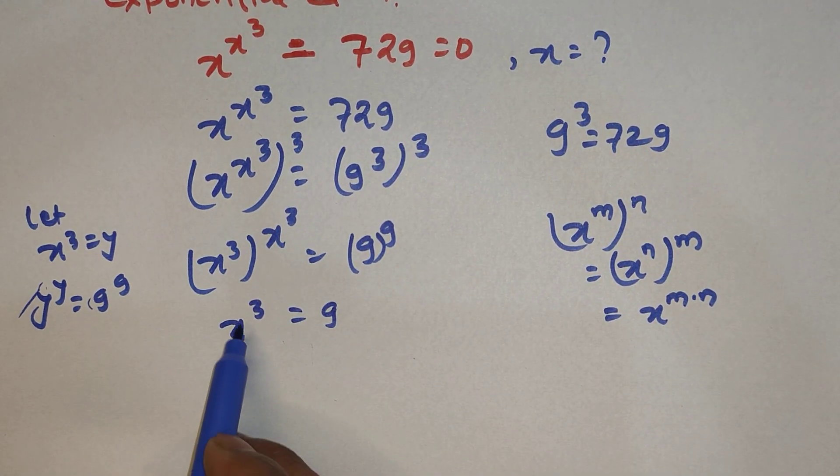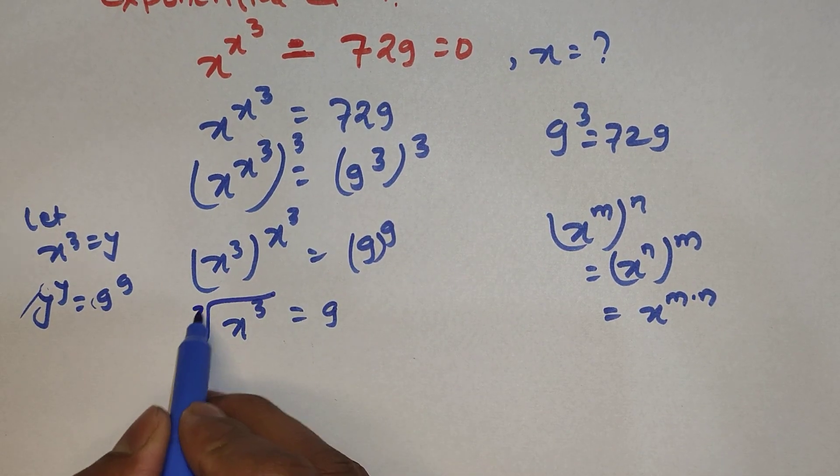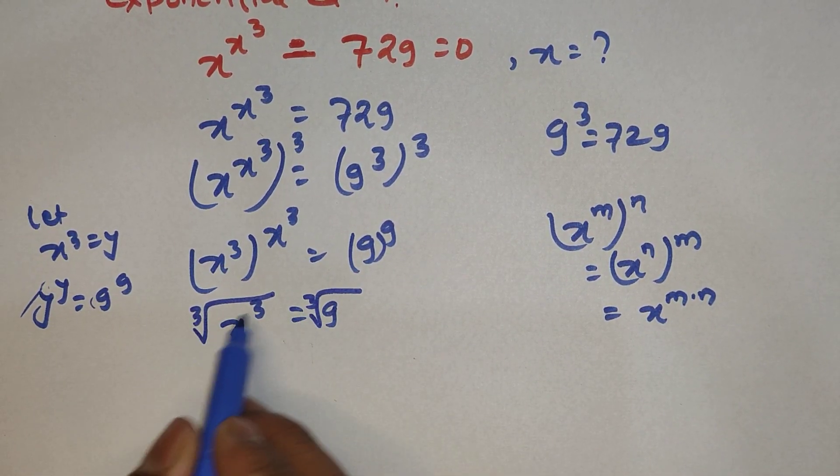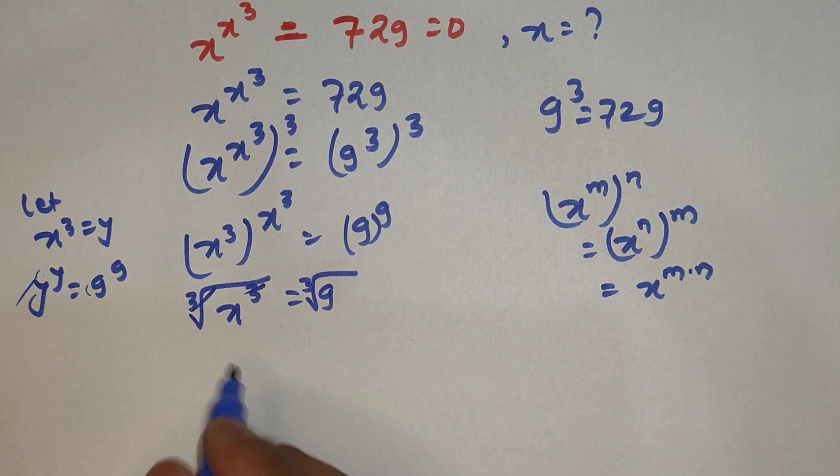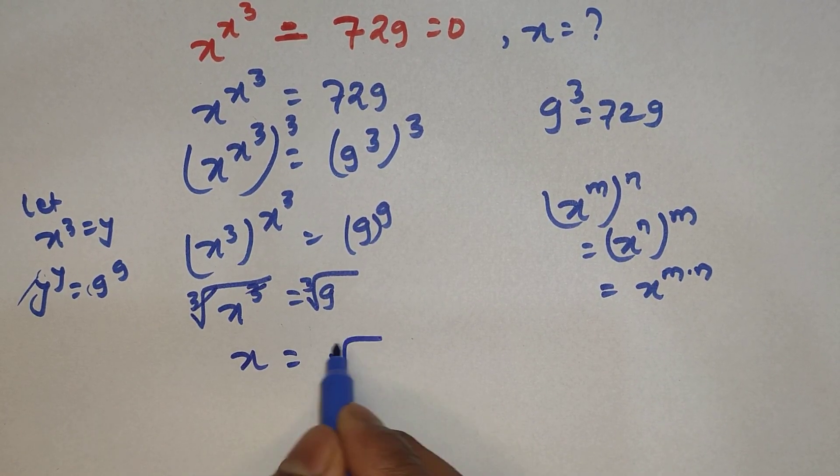After that, we have to find the value of x. So what we do is take the cube root of both sides. This cube and the cube root will cancel, and then our answer will be the cube root of 9.